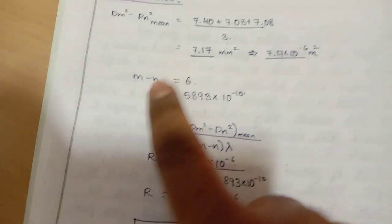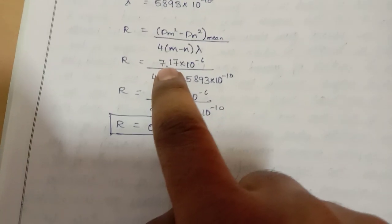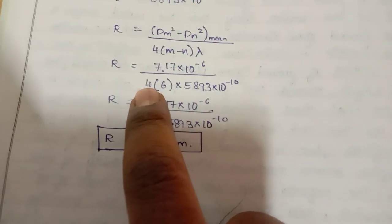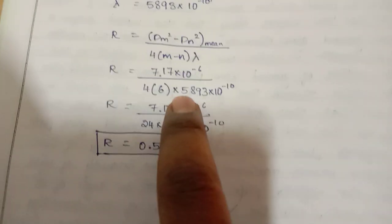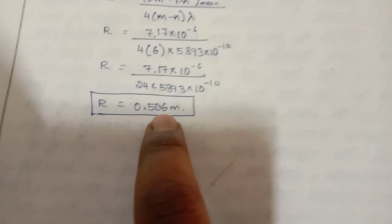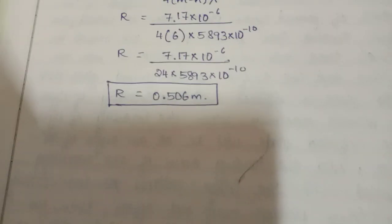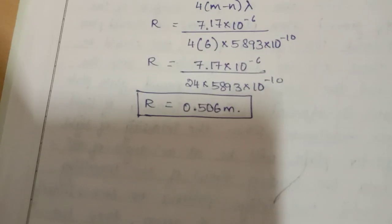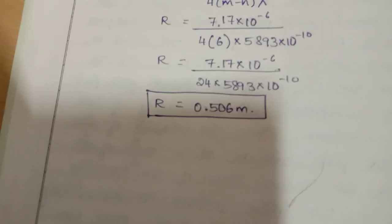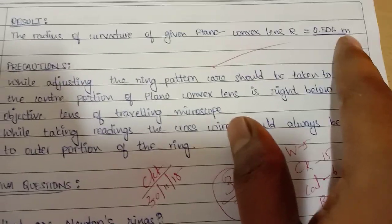Substitute the values into the formula R = (D_m² − D_n²) / (4·(m−n)·λ): m − n = 6, λ = 5893 × 10⁻¹⁰ m, and the mean (D_m² − D_n²) = 7.17 × 10⁻⁶ m². Simplifying gives the radius of curvature of the given plano convex lens. With the help of Newton's rings, you can precisely measure the radius of curvature — even though the lens looks flat by observation, the interference fringe pattern allows exact measurement. The result of this experiment: the radius of curvature of the given plano convex lens is 0.506 meters. Thank you.